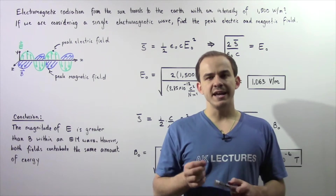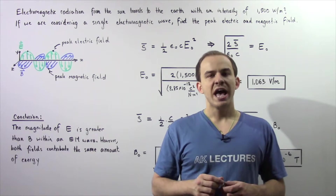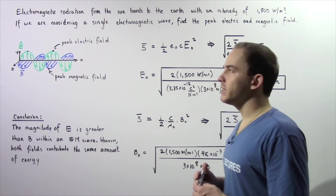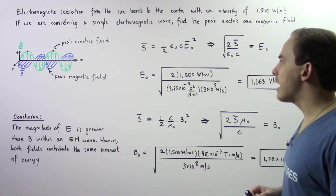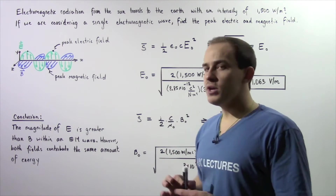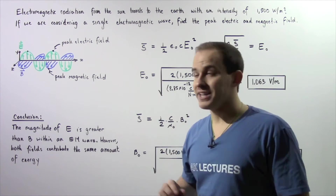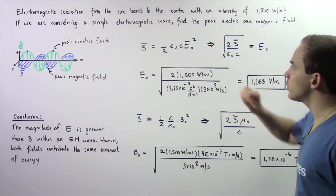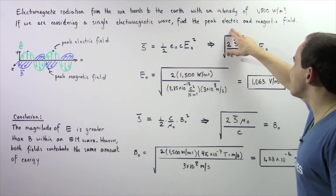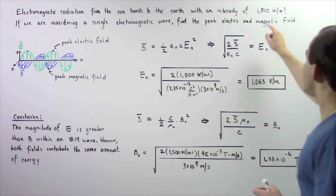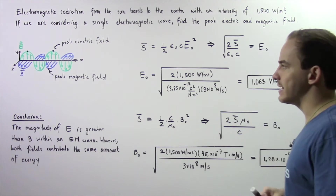Let's look at the following example dealing with the Poynting vector and intensity of electromagnetic waves. Electromagnetic radiation from the sun travels to the earth with an intensity of 1,500 watts per meter squared. We are considering a single electromagnetic wave coming from the sun moving to the earth, and we want to find the peak electric and magnetic fields of that wave carrying this intensity.